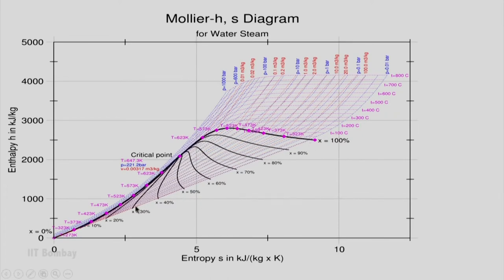What you can directly see are the different x lines, different dryness fraction lines, constant dryness fraction lines. x equals 10 percent, 20, 30, 40, 50, 60, 70, 80 and 90, and in between these you can interpolate. Graphical interpolation may not be accurate, but that is sufficient to convey what it should.